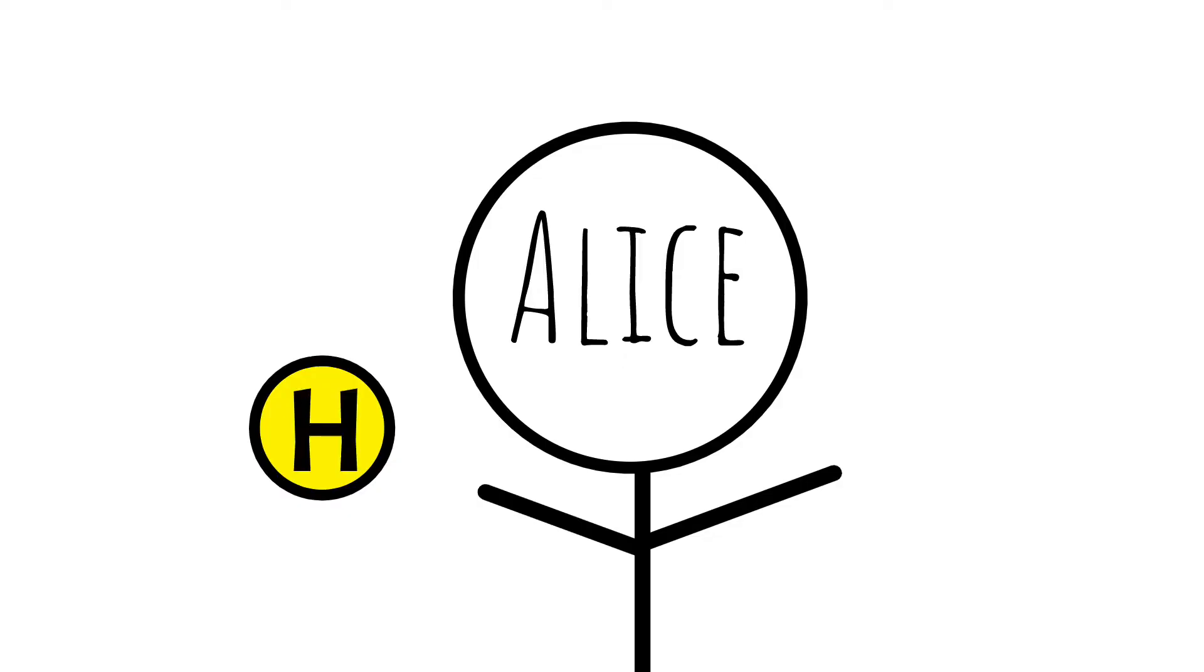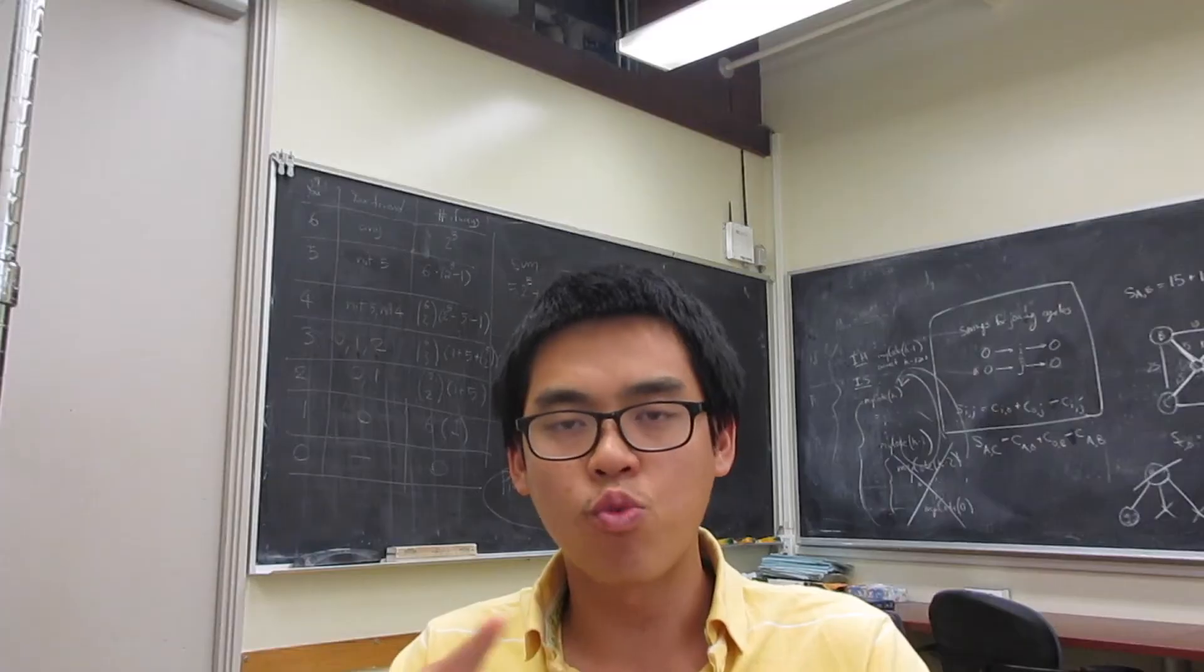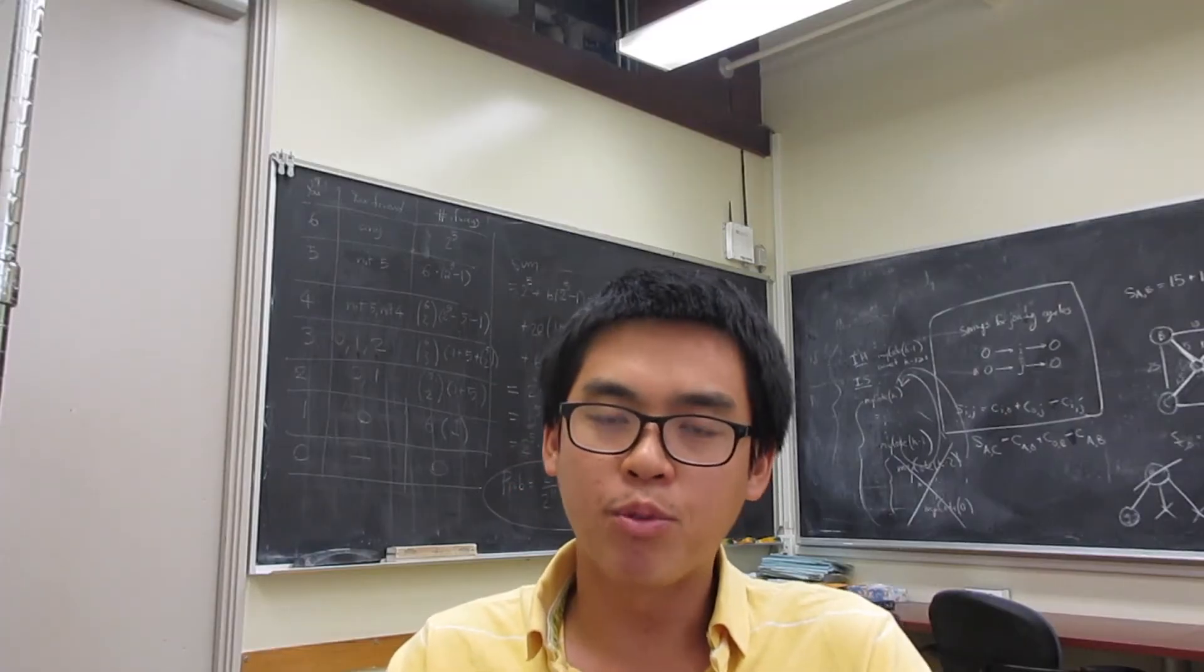If the last coin turns out to be heads, she will have one more head than Bob. Then she wins. If the last coin turns out to be tails, then both of them will have the same number of coins. So Bob wins. So head, Alice wins. Tail, Bob wins. So probability that Alice wins is one half.